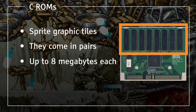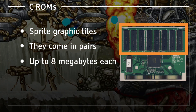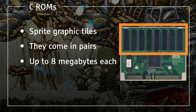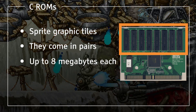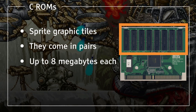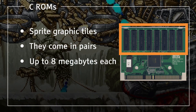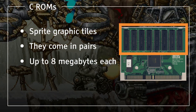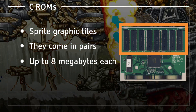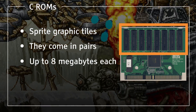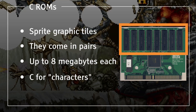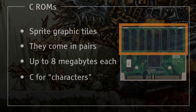These chips can be big boys, topping out at eight megabytes each. King of Fighters 2003 has a whopping 64 megabytes of graphics data. In later games, this data was encrypted in an attempt to thwart piracy. C probably stood for character, which is just another term for tile.